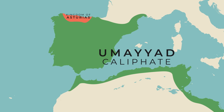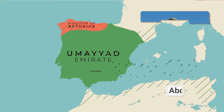From 720 to 750, various governors of Umayyad Spain came and went. The Umayyad caliphate in Damascus was overthrown by the Abbasids, and one Umayyad prince named Abd al-Rahman escaped to Spain and formed the Emirate of Cordoba there, centered on the city of Cordoba. Abd al-Rahman's descendants ruled most of the Iberian peninsula all the way till 1031.